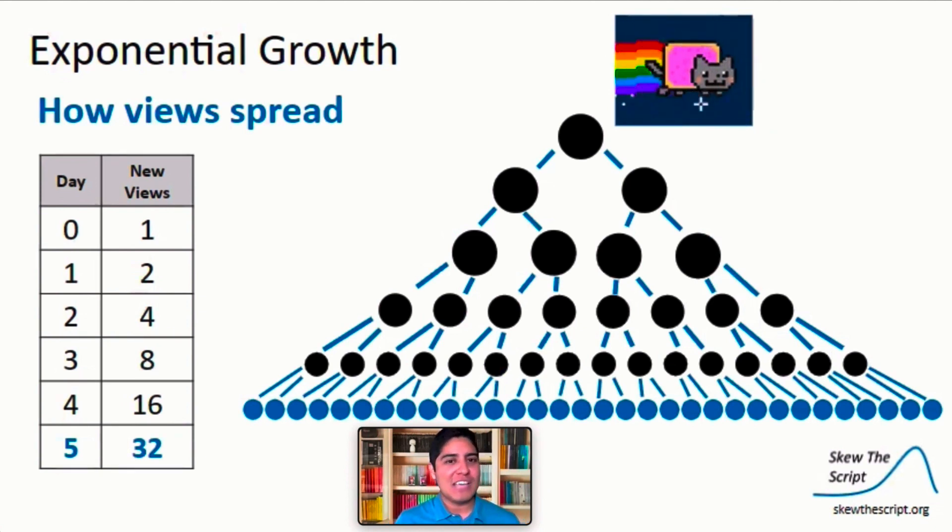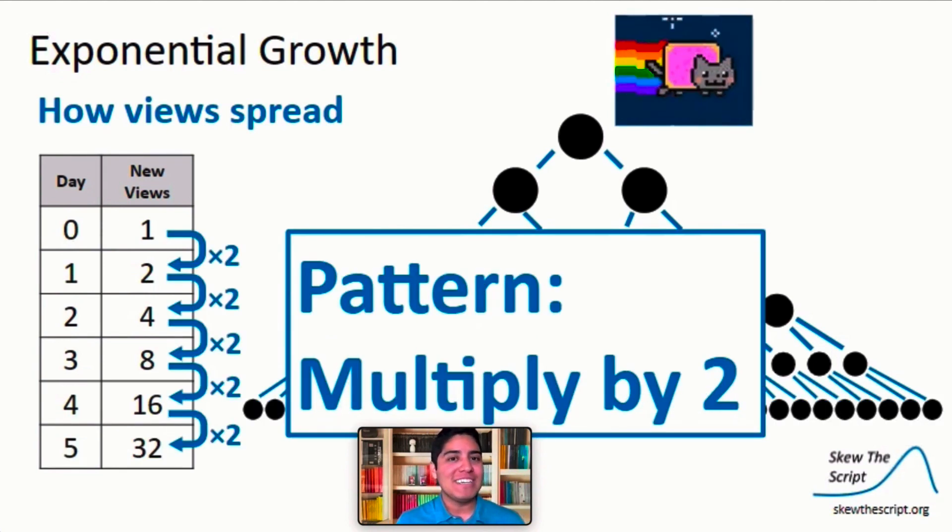Let's take a look at the table we created. Do you notice a pattern in the new views column? To get from one day to the next, we multiply the number of new views by two. Now our tree diagram is getting a little out of hand, so maybe we can use this table to model the scenario in a different way.